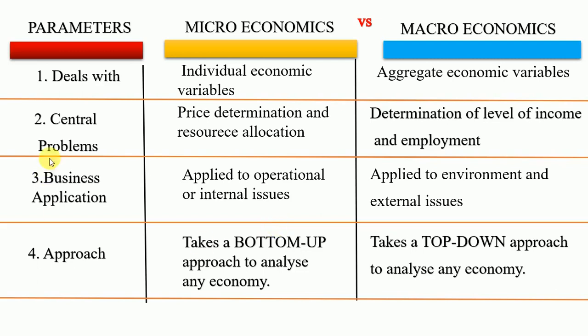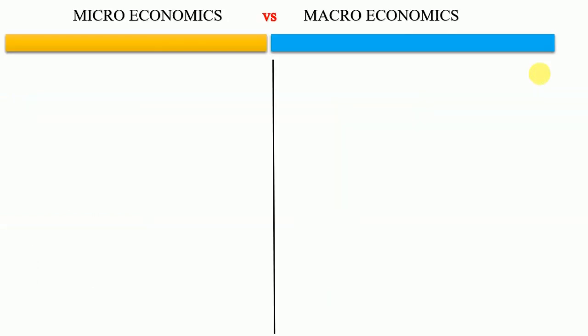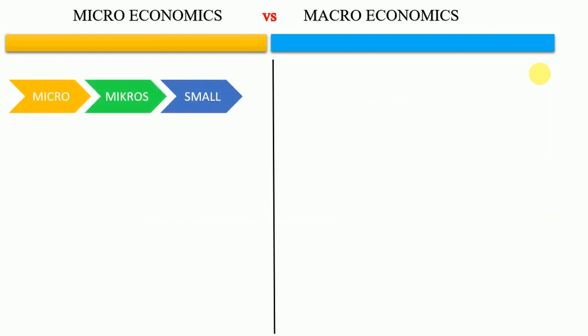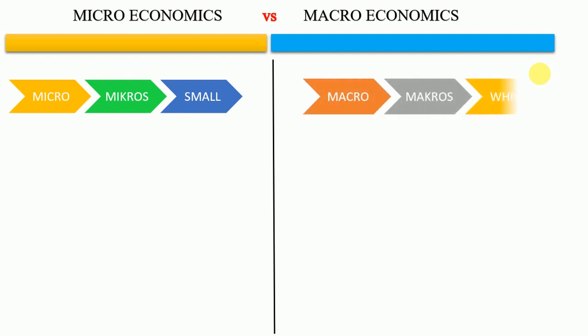Microeconomics deals with individual economic variables whereas macroeconomics deals with aggregate economic variables. The term micro has been derived from the Greek word micros which means small, individual or single. So microeconomics studies the individual units of an economy, whereas the term macro has been derived from the Greek word macros which means whole, total, or aggregate. So macroeconomics analyzes economic variables as a whole or in total.